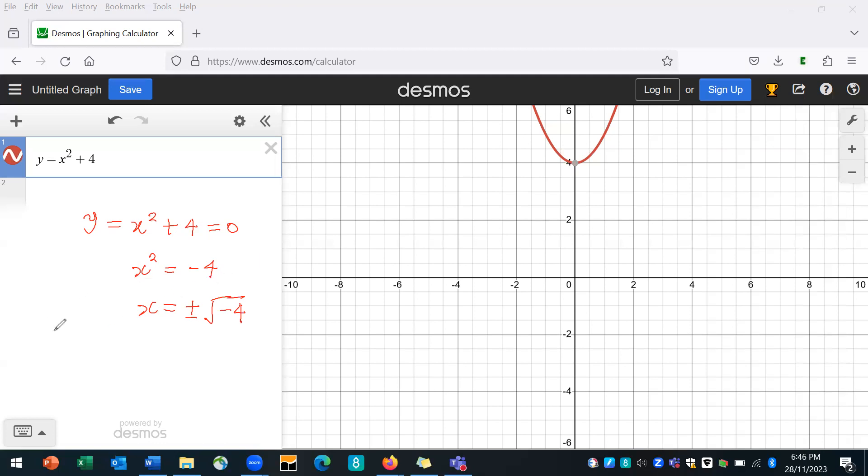Now, what happens if I put minus 4? You can see that this now has a real root. You can see it's crossing the x-axis at minus 2 and 2.